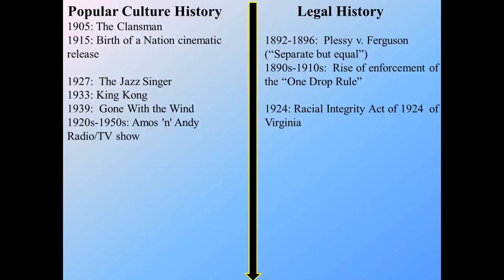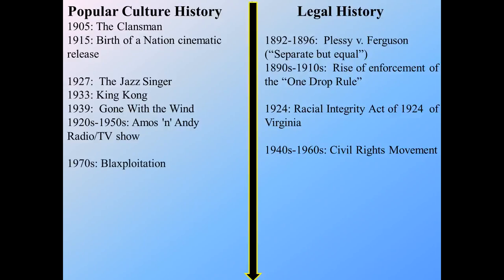From the 1940s to the 1960s, we see the civil rights movements start to address this in some really profound ways, at least on the legal end. They still have trouble with the popular culture side. They do attempt to reposition both the legal and the representation of African-Americans. The 1970s give rise to what's known as blaxploitation — films that often both hyper-sexualized and hyper-masculinized African-Americans. One of the most famous is Shaft.